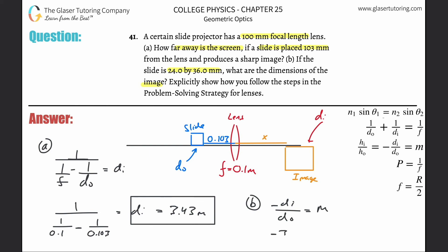Let's calculate: -3.43 divided by 0.103 equals -33.3. This is the magnification.